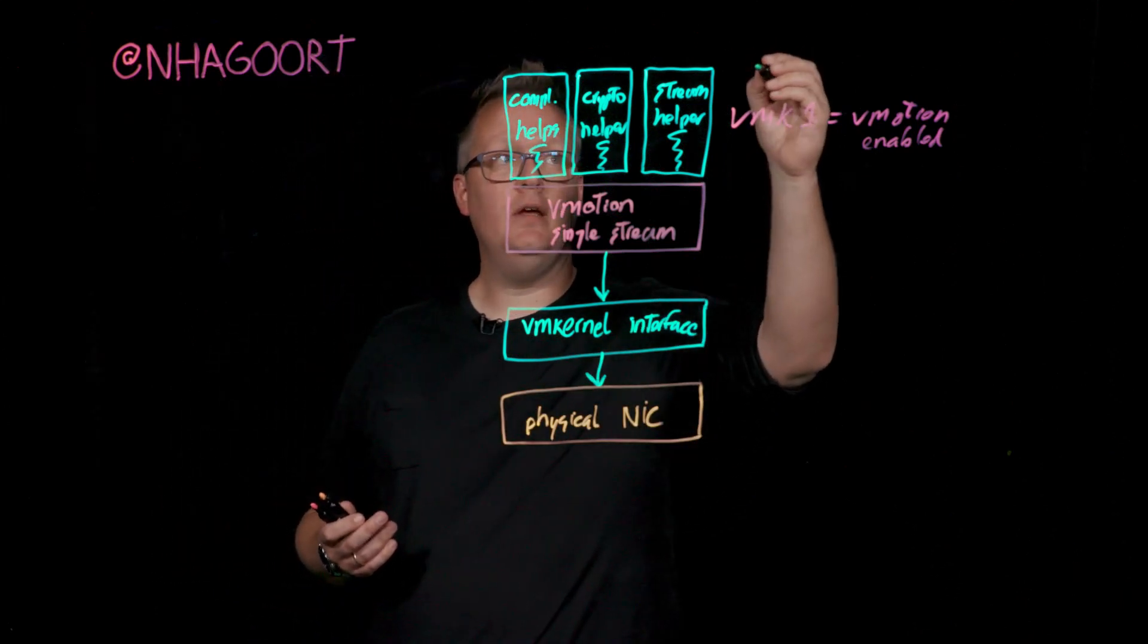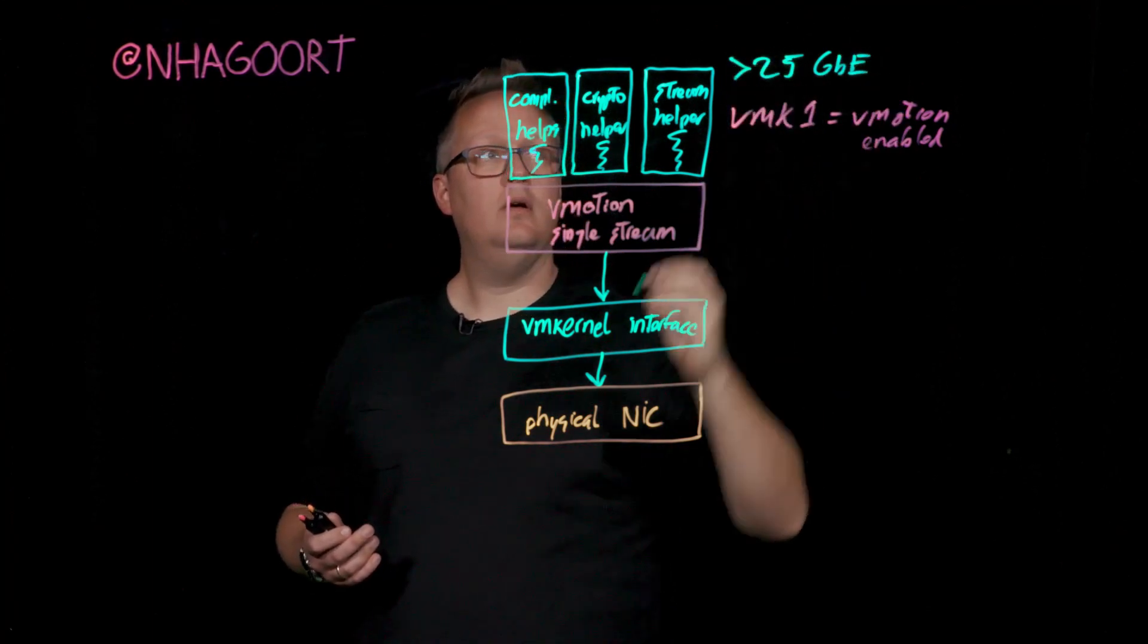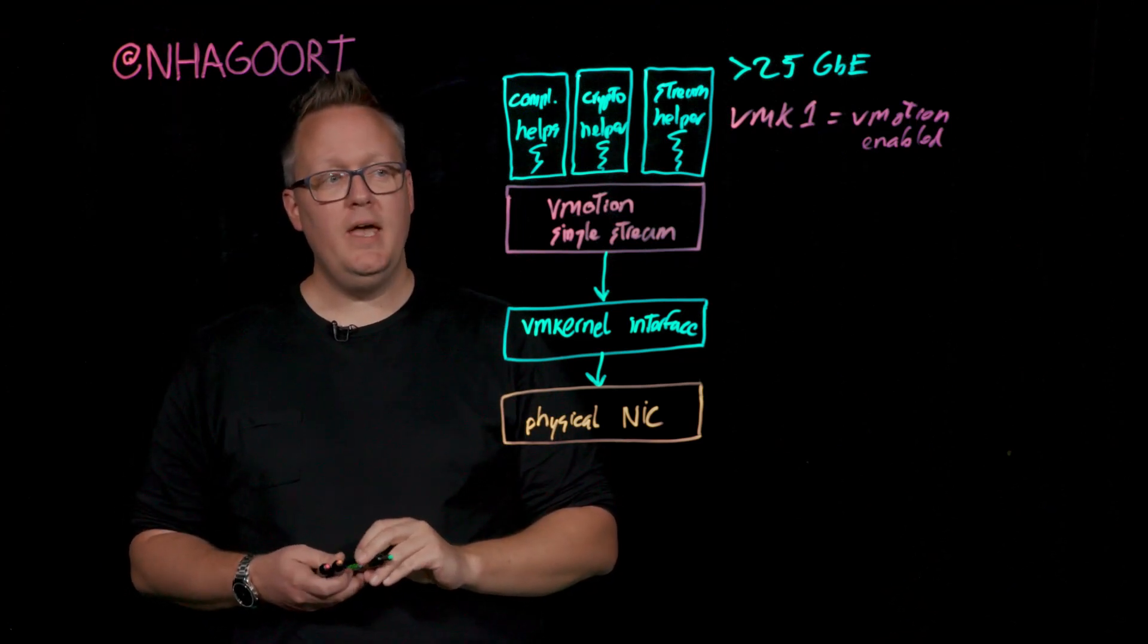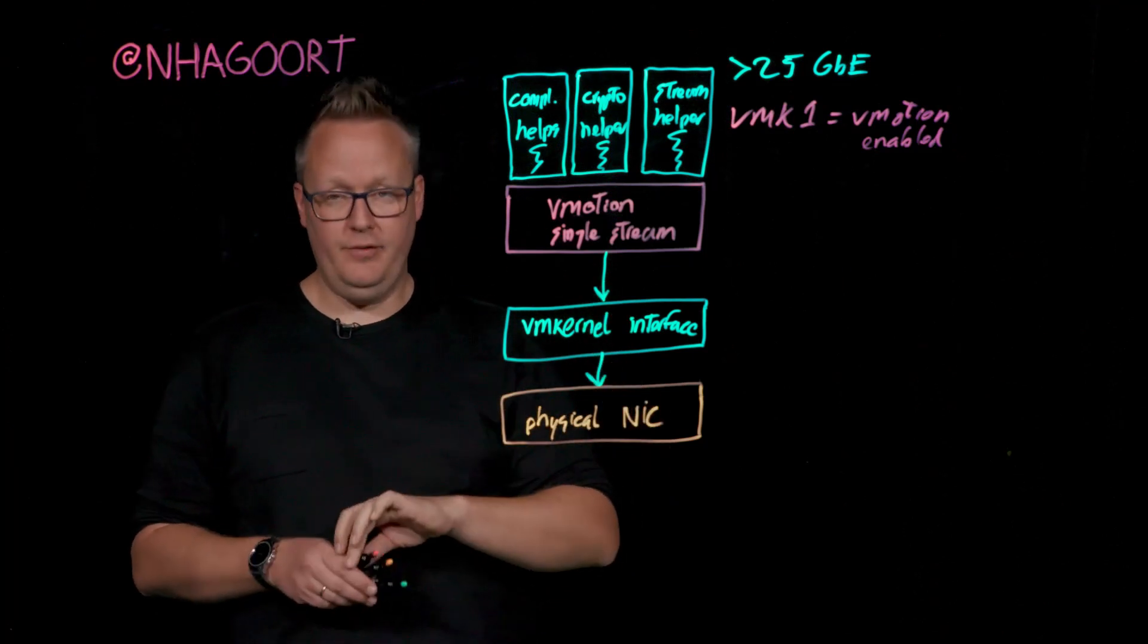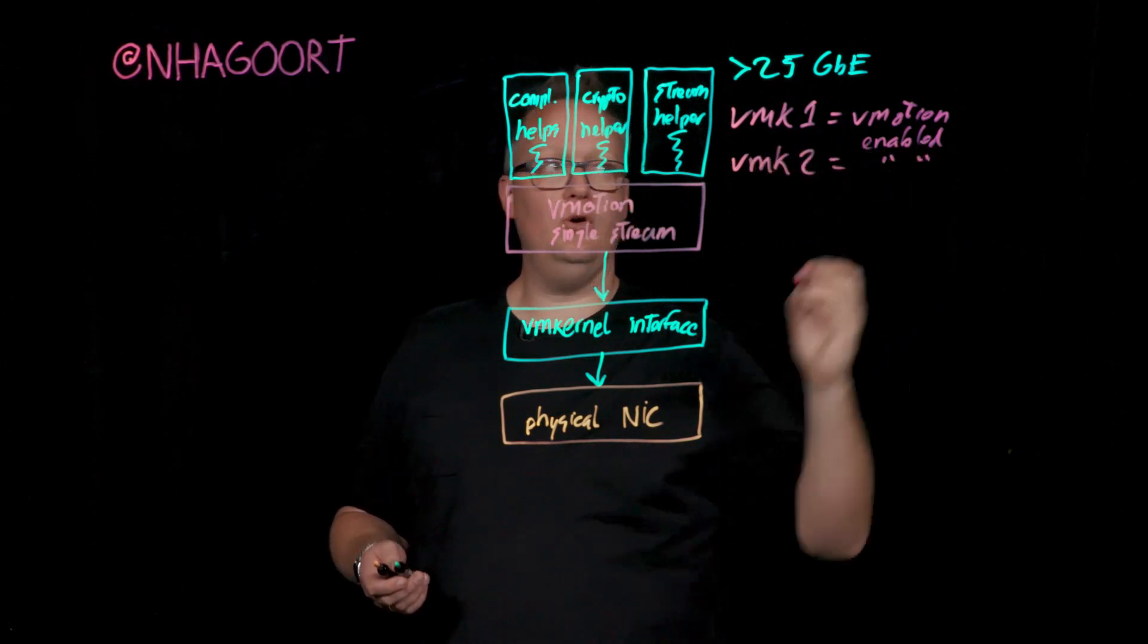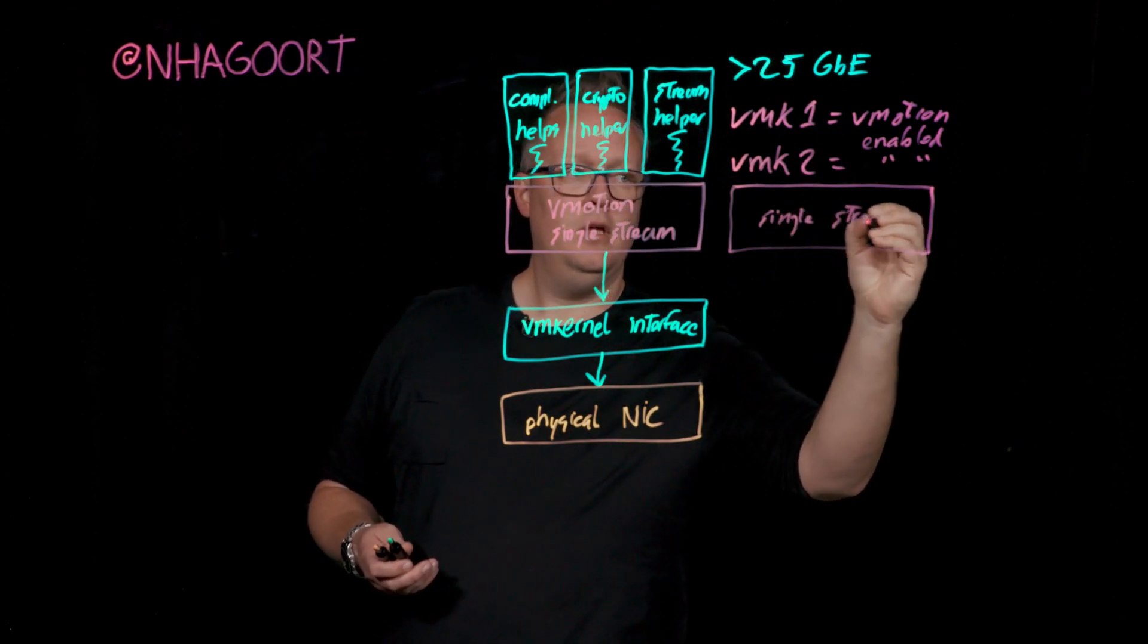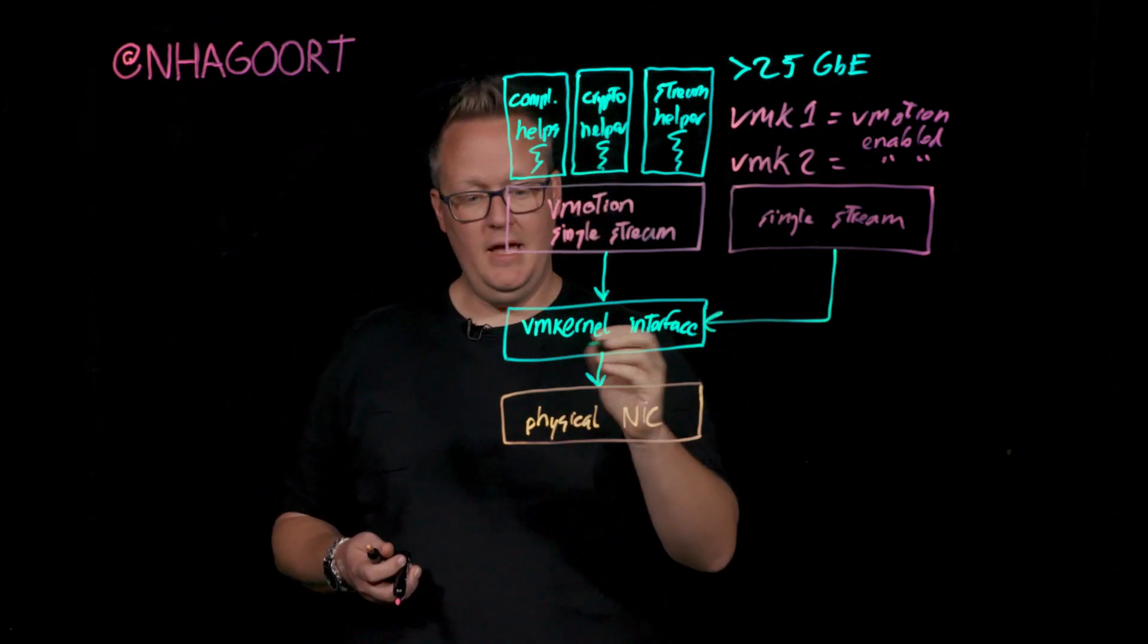If we are using 25 gig or higher networks, then it might be useful to tune the stream architecture within vMotion, and we have some options to do so. What we can do, and that's probably the easiest thing to do, is create an additional VM kernel interface. If you create, for example, VM kernel interface 1, which is also vMotion enabled, we will now spin up an additional single stream.